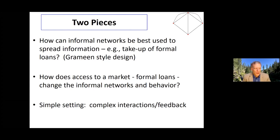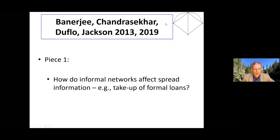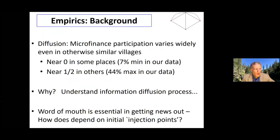So how does access to a market — in this case, formal credit — change the informal networks and behavior of people in a society? In terms of complex systems, we're going to have a feedback between the informal structure of the social fabric and the workings of the formal markets. Piece one comes from work with Abhijit Banerjee, Arun Chandrasekhar, and Esther Duflo, that started in 2006 and was published first in a paper in 2013, and then a follow-up paper in 2019. This piece is how do informal networks affect the spread of information and the take-up of loans?